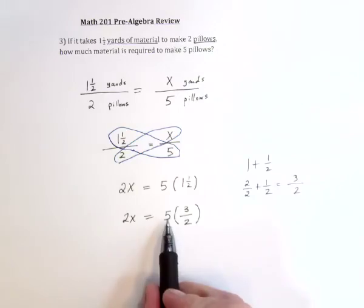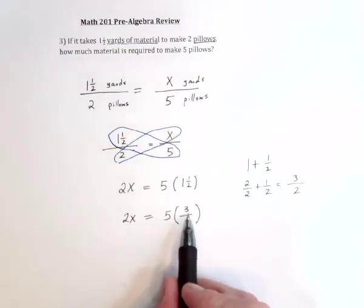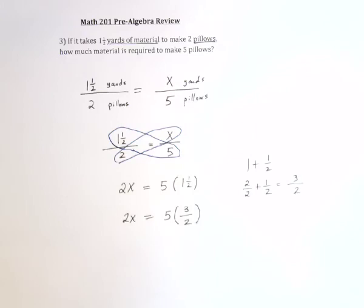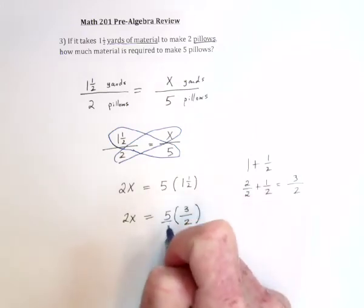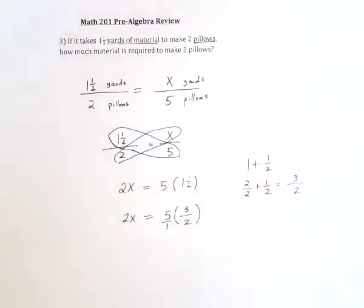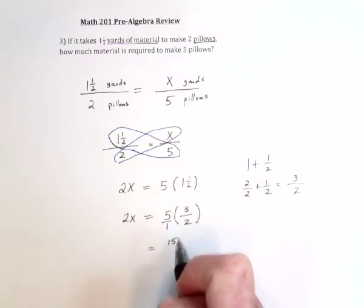Then to multiply, essentially what we're doing is multiplying fractions, because the five could be viewed as five over one. The rule for multiplying fractions is you multiply on the top, 15. You multiply on the bottom, two.